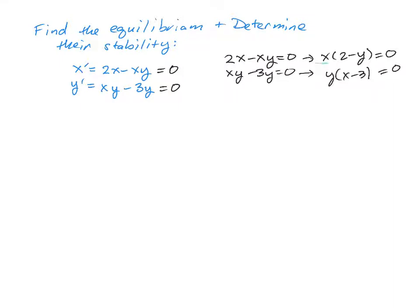The top equation says that either x must be 0 or 2 minus y is equal to 0, and 2 minus y equals 0 of course means that y must be equal to 2. We now take each one of these and substitute them into the second equation to see what it tells us. So if x is equal to 0, that's going to force the y to be equal to 0.